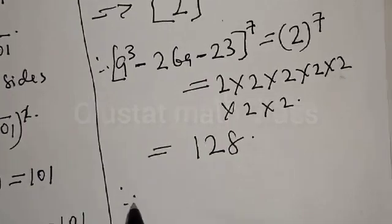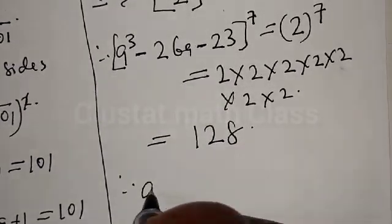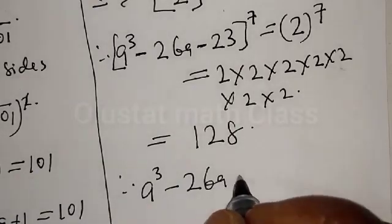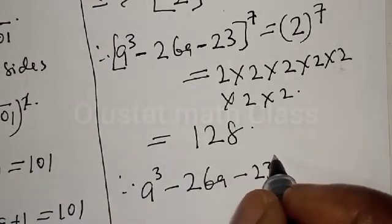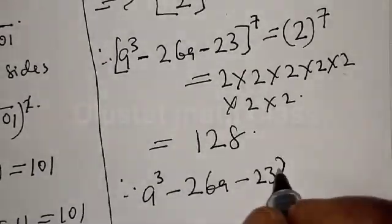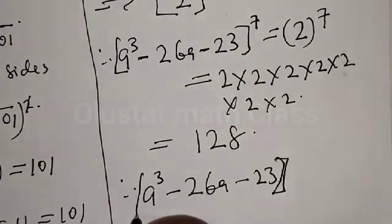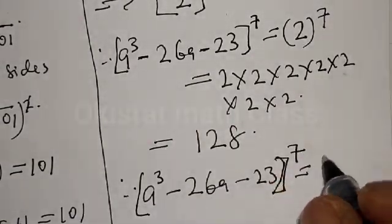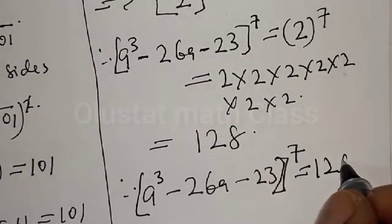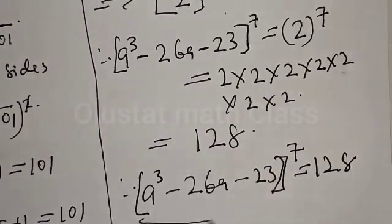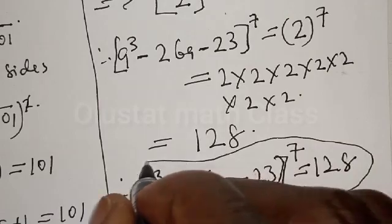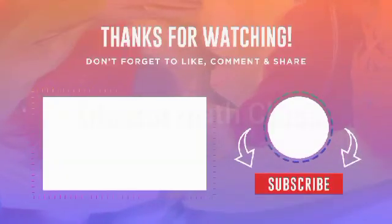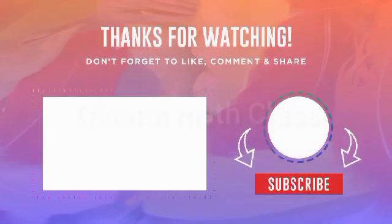Therefore, our final answer is: a raised to power 3 minus 26a minus 23, all raised to power 7, is equal to 128. If you've enjoyed the class, please don't forget to like, share, comment and subscribe. Thank you.